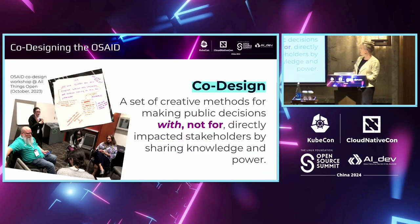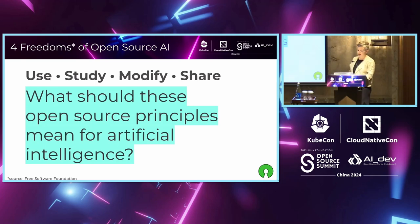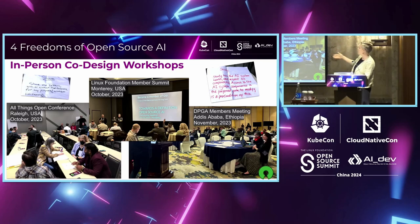Co-design is a set of creative methods for making public decisions with, not for, directly impacted stakeholders by sharing knowledge and power. The first co-design question was: we have these principles from the Free Software Foundation — use, study, modify, and share. What should these open source principles mean for artificial intelligence? What should the four freedoms look like for open source AI? We had three in-person co-design workshops — two in the U.S. and one in Ethiopia — and did this for all four of the freedoms.